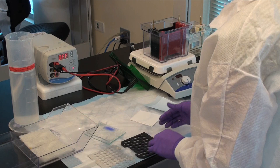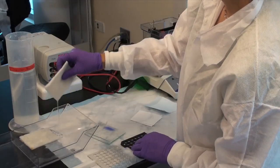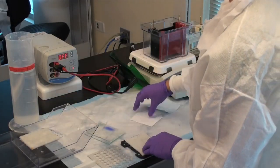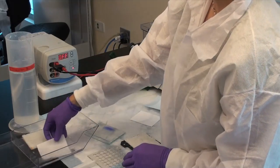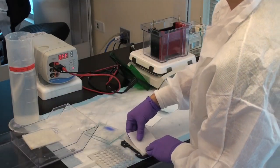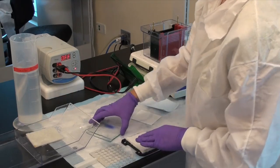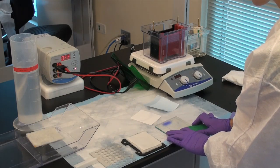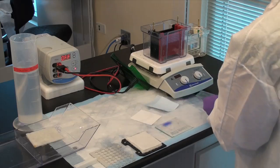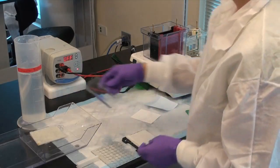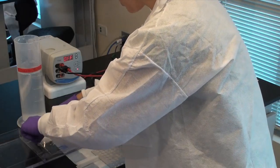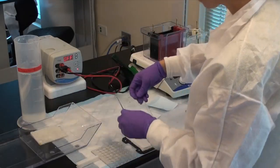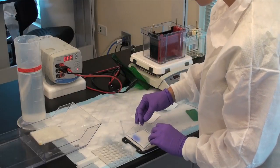Assemble your sandwich in the following order, pre-wetting each component in transfer buffer before its addition with the black half of the sandwich on the bottom. Sponge, filter paper, gel carefully laid out flat.